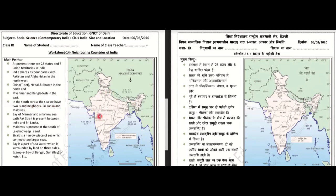To the south of India, there are two island neighbors — Sri Lanka and Maldives. The Bay of Manar and a narrow sea path called Palk Strait is present between India and Sri Lanka. Maldives is present to the south of Lakshadweep Island.